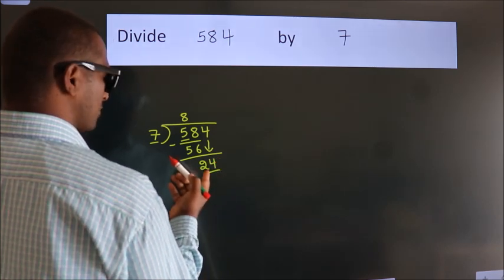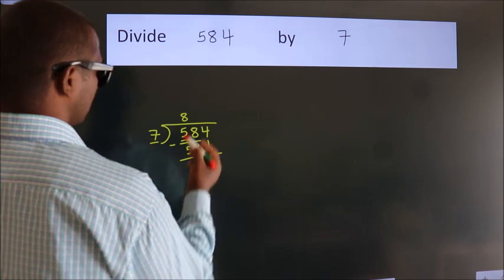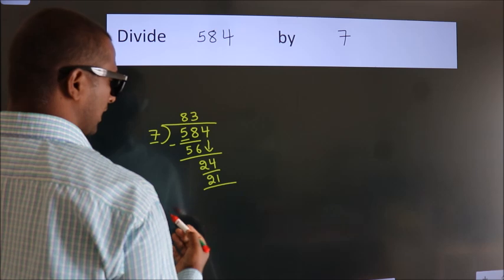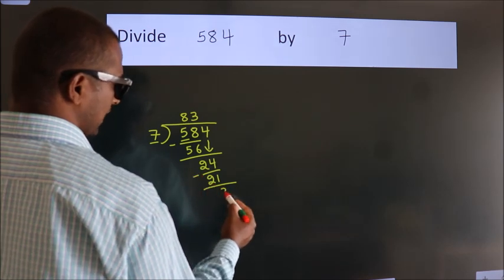A number close to 24 in the 7 table is 7 threes, 21. Now we subtract. We get 3.